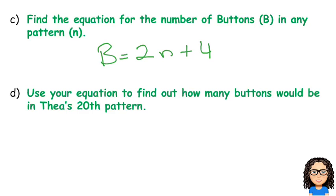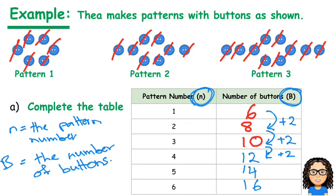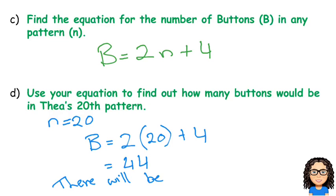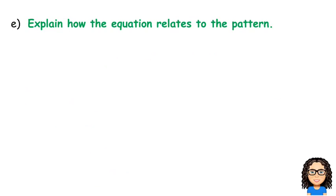The next one. Use your equation to find out how many buttons would be in their 20th pattern. So, we want to know about the 20th pattern. So, that's going to be n. N is our pattern number. Go back to that definition. N is the pattern number. So, the 20th pattern, I'm going to substitute that into this equation. And in place of the n, I'm going to replace that with the number 20. So, that's going to say 2 times 20 is 40, plus 4 is 44. So, there will be 44 buttons.